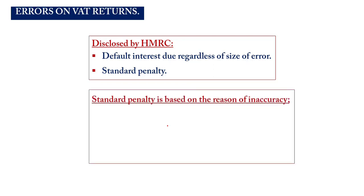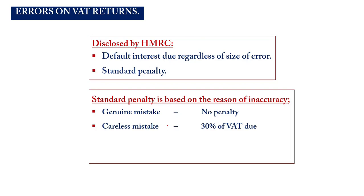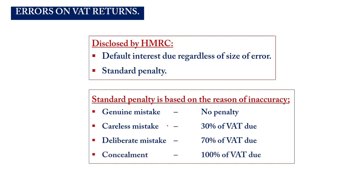The standard penalty depends on the reason for the inaccuracy. If the mistake was genuine, no penalty applies. If it was careless, a penalty of 30% of the VAT due is raised. If the error was deliberate, 70% of the VAT is charged as a penalty. If the error was both deliberate and concealed, and HMRC discovered it, 100% of the VAT recorded erroneously is charged as the penalty.